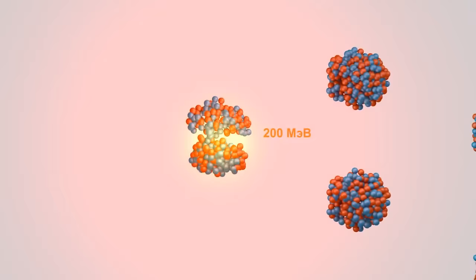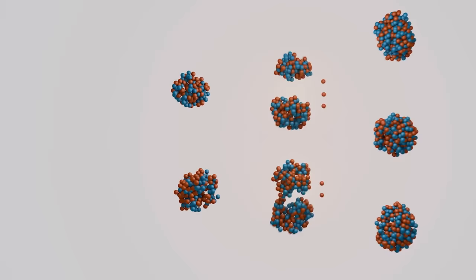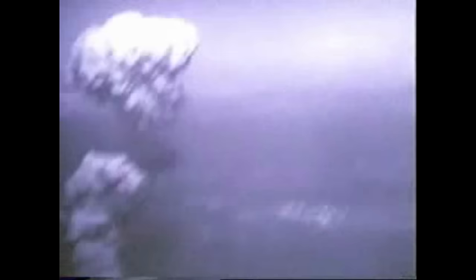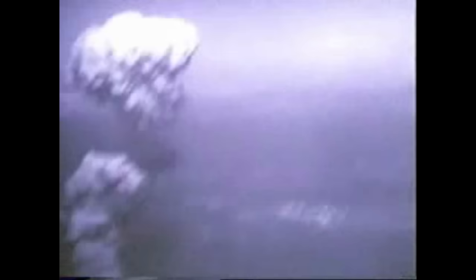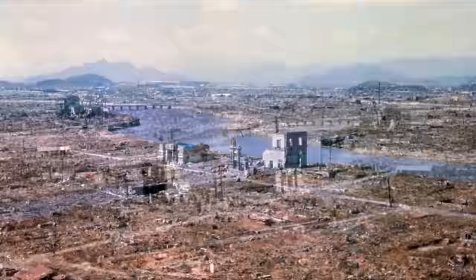when uranium cores would start dividing under the influence of an enormous amount of neutrons, which reflected off the tamper made from tungsten carbide. As a result, the nuclear explosion killed about 200,000 people, becoming the first use of atomic weapon in history.